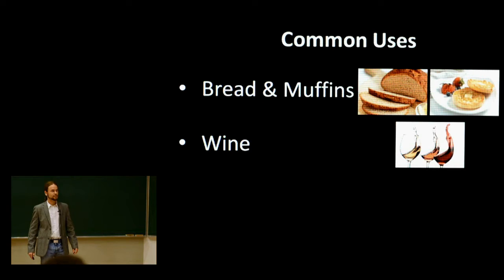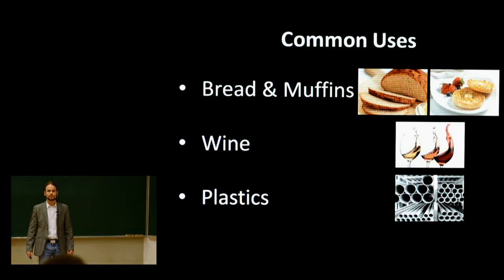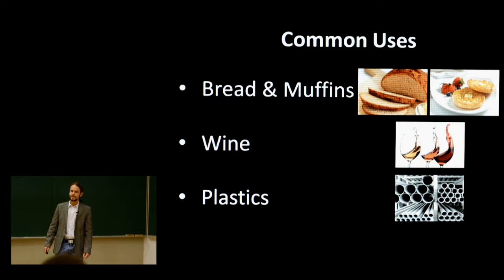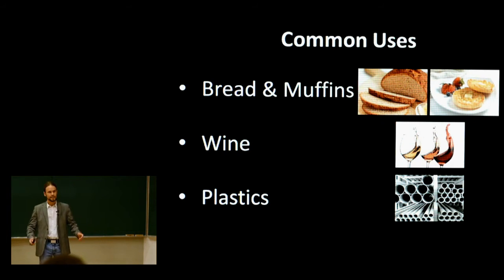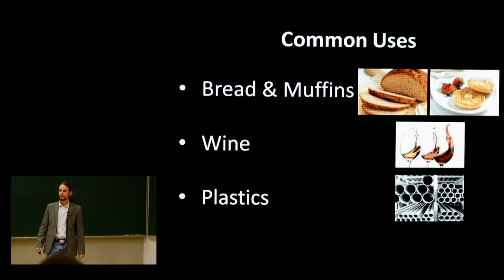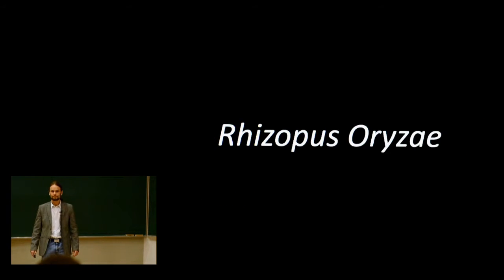A third application is in the plastics industry, more specifically unsaturated polyesters. Now that we've established that fumaric acid actually has some sort of use in our daily lives, we have to find an alternative to produce this chemical through renewable resources. The ideal candidate for this task? The fungus Rhizopus oryzae.